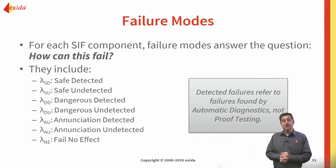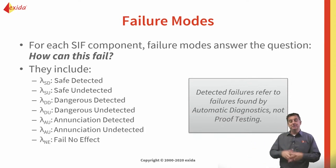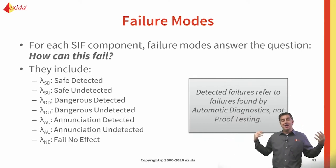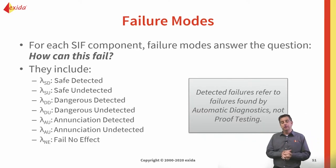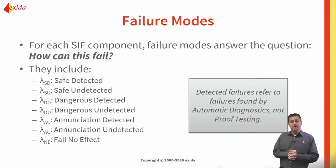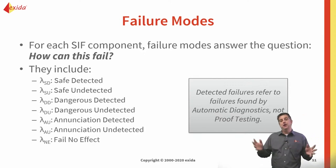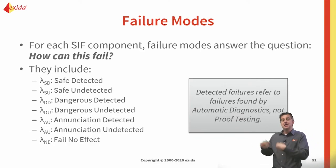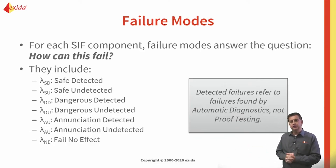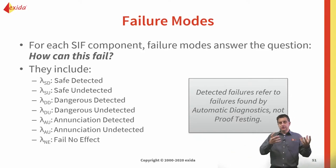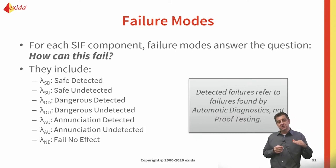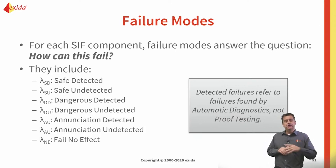Many of the transmitters and logic solvers we use in safety applications have extensive diagnostics to determine internal problems. This can be as simple as watchdogs to ensure inputs change, or redundant calculations performed through two different means expecting the same output with comparison diagnostics. We use these diagnostics to divide failures into four categories: safe detected, safe undetected, dangerous detected, and dangerous undetected.